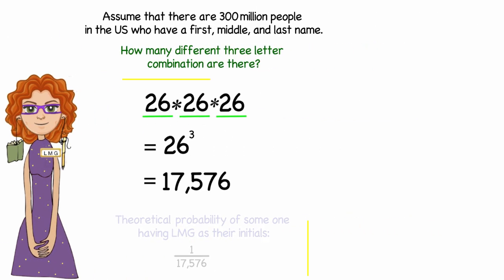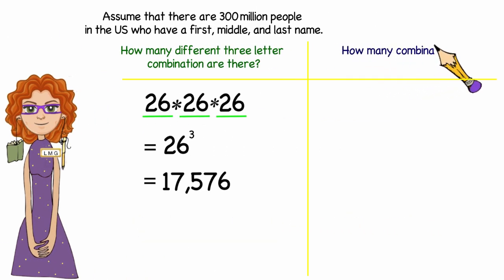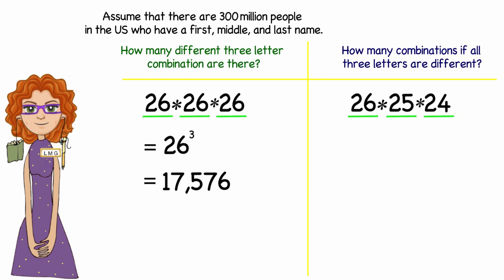What if I change that problem a little bit? What if I wanted to know how many possible combinations where all three letters are different? Well, there'd be 26 for the first letter option, but I've used up a letter. So now there's only 25 for the second option and 24 for the third option.